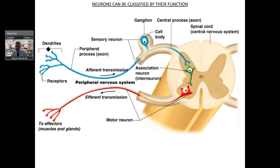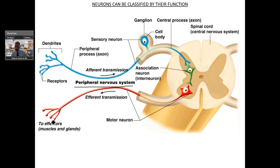This is very similar to what you saw before. You've got your dendrites — your afferent pathway. The dendrite is part of the peripheral nervous system, and then it goes over to the central body. This is sensory — afferent — coming in.